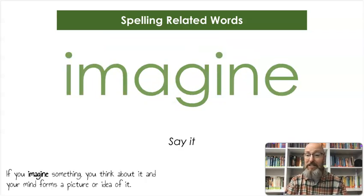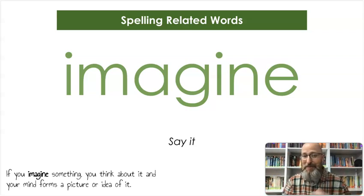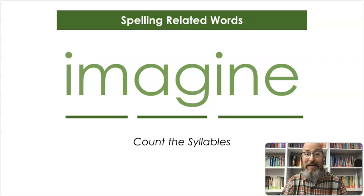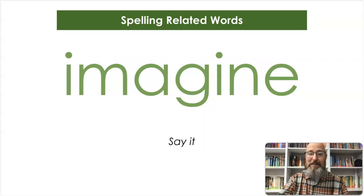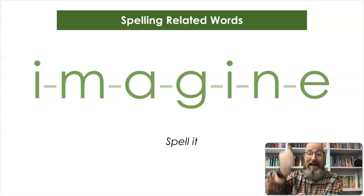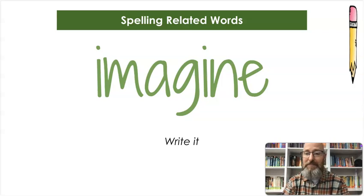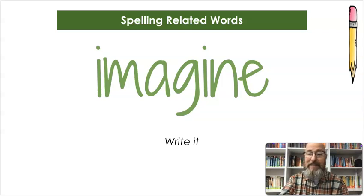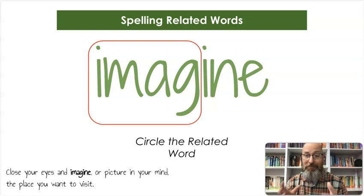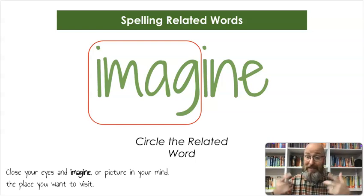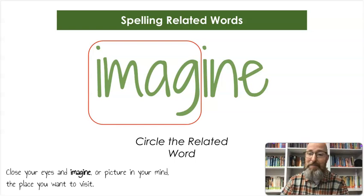Our next word is imagine. If you imagine something, you think about it, and your mind forms a picture or idea about it. Let's count the syllables — im-ag-ine, imagine. Let's spell it: I-M-A-G-I-N-E, imagine. And let's write it: I-M-A-G-I-N-E. We're going to circle that first part of the word — it would be the part of the word image, but it's imagine. Because when you imagine, you create an image. Close your eyes and imagine — picture in your mind — the place you want to visit.